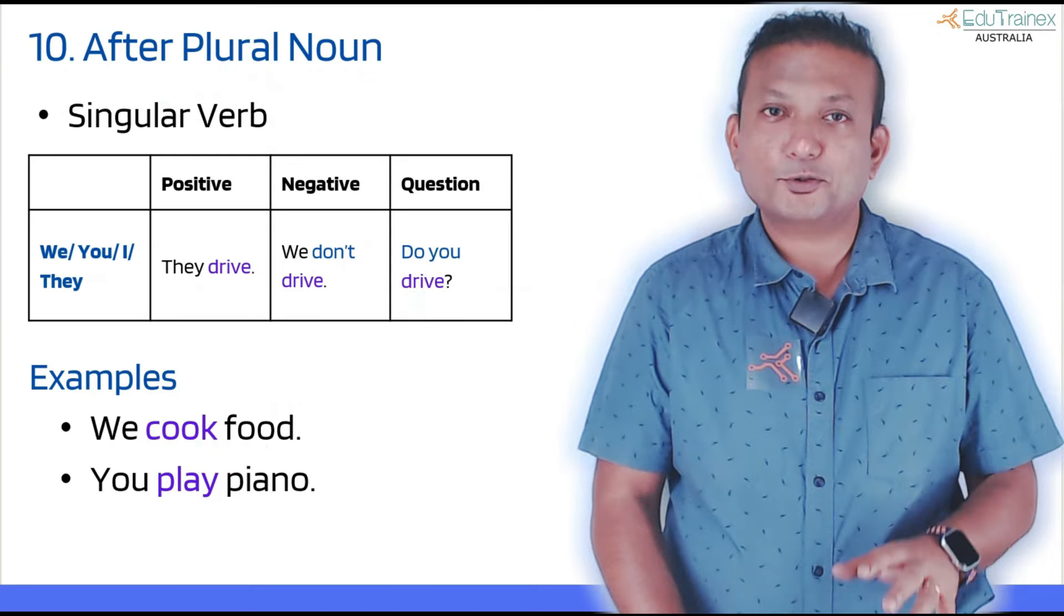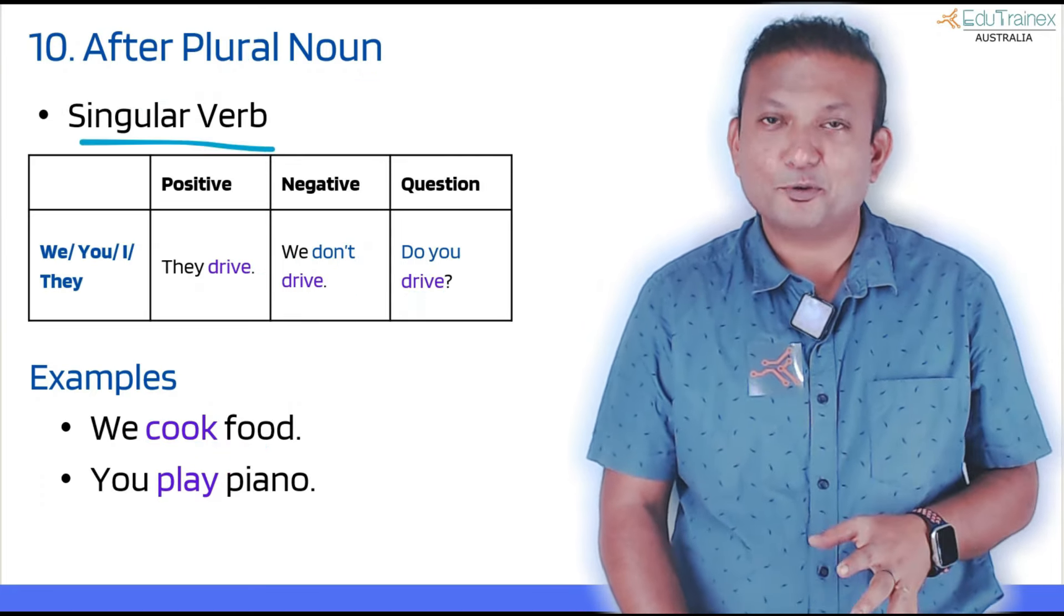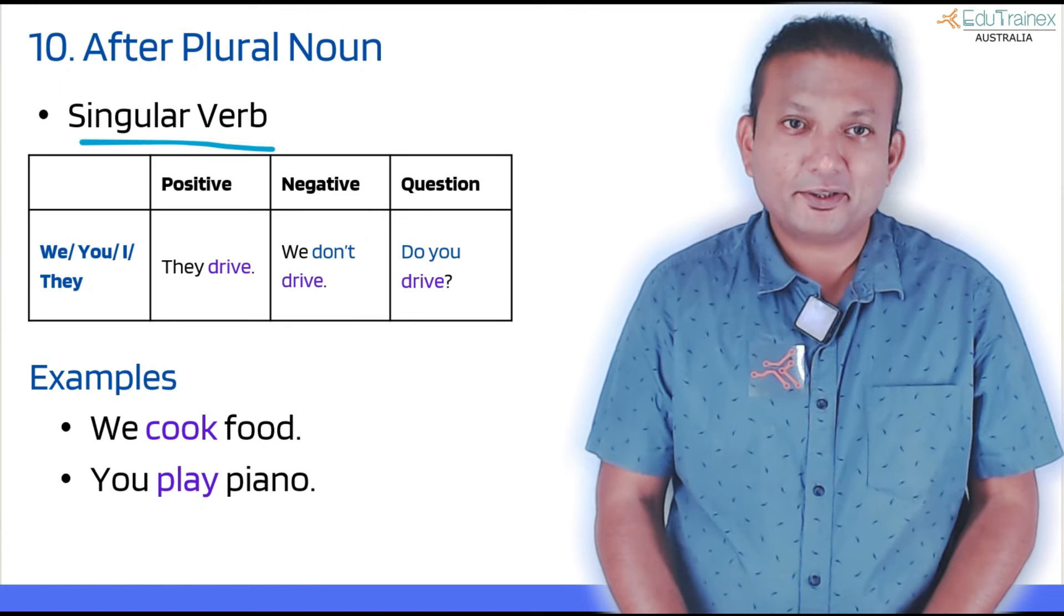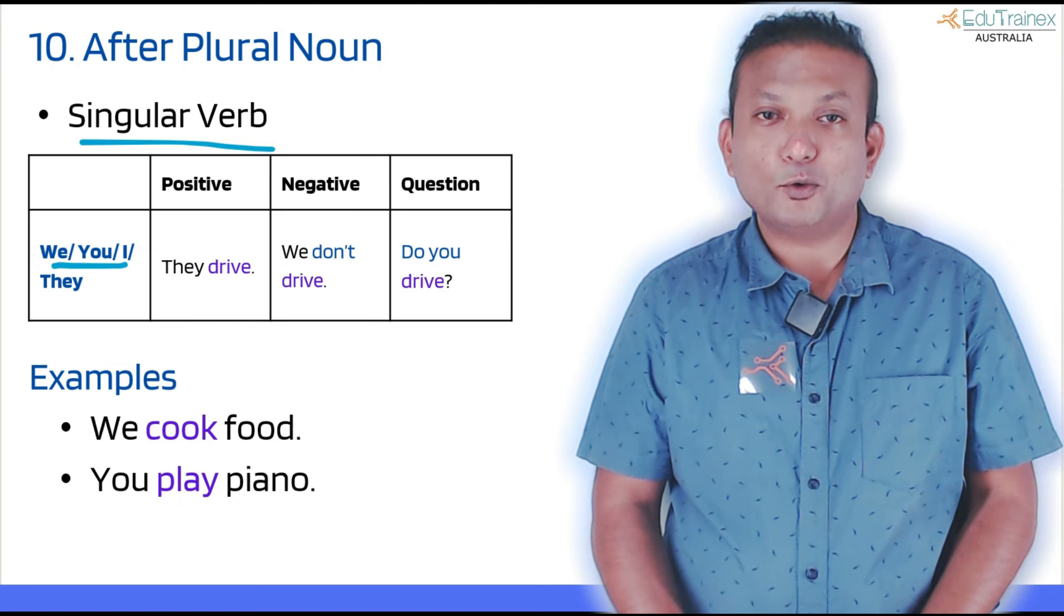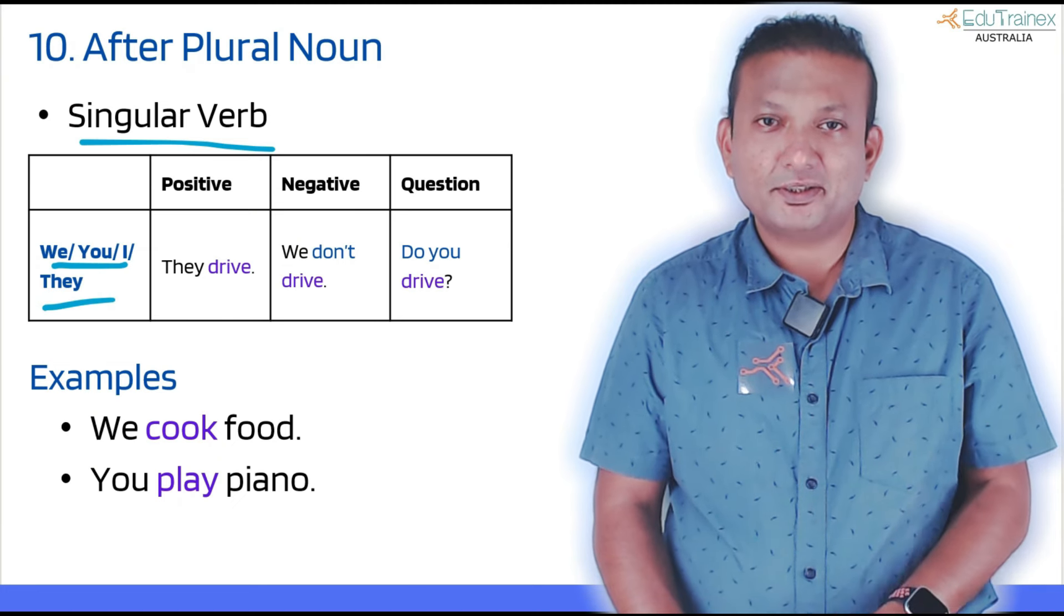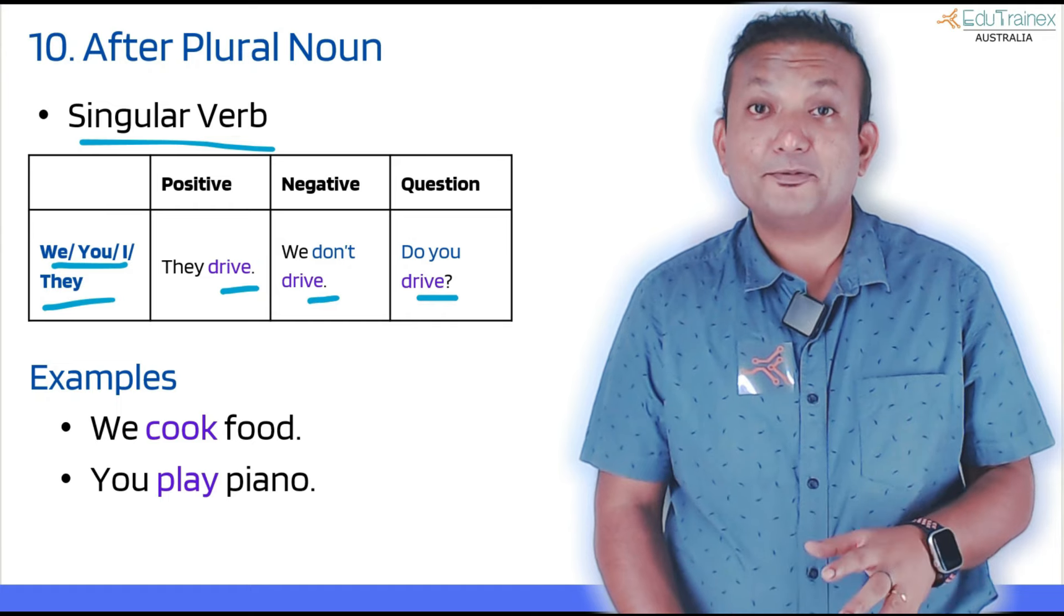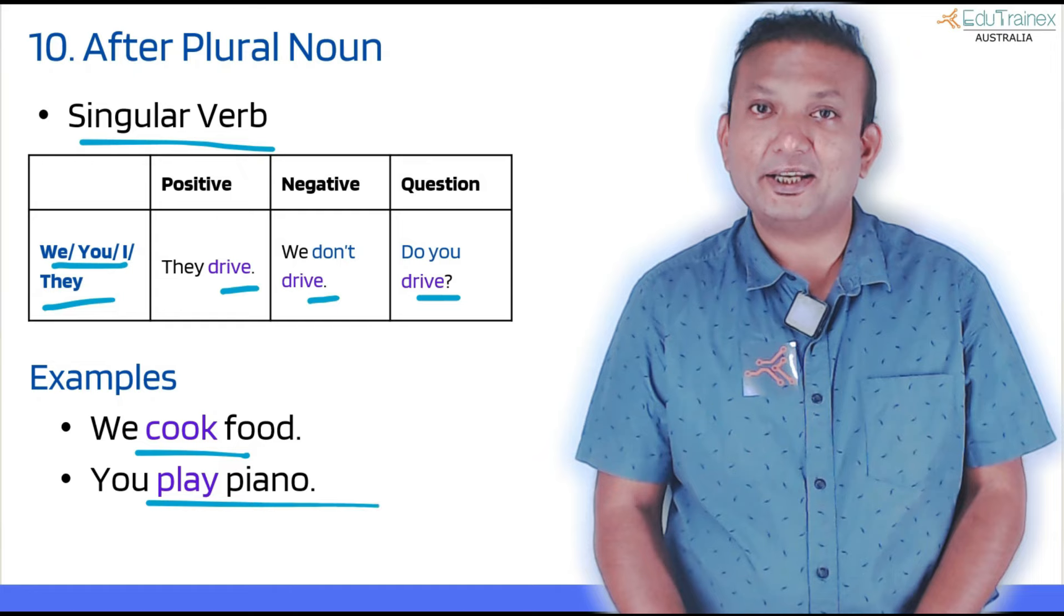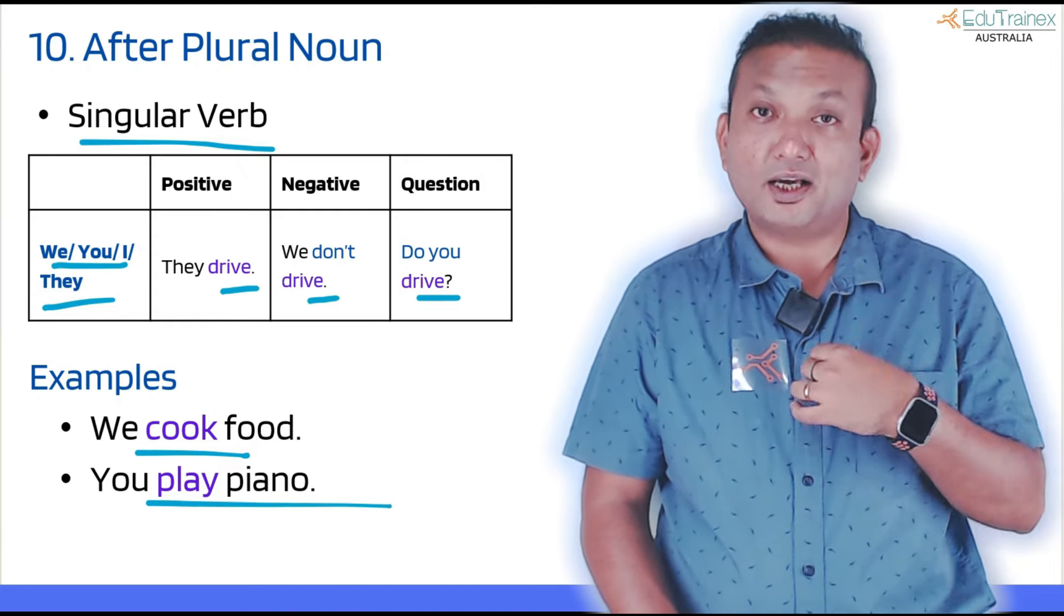The next one is what comes after a plural noun, exactly the opposite of what we just saw: a singular verb this time. See the table here. It is used with we, you, I, and they, and always, no exceptions here, always the verb will be singular: 'they drive,' 'we don't drive,' 'do you drive?' And see how the examples also changed: 'we cook food,' 'you play piano.' Singular verb after plural nouns.